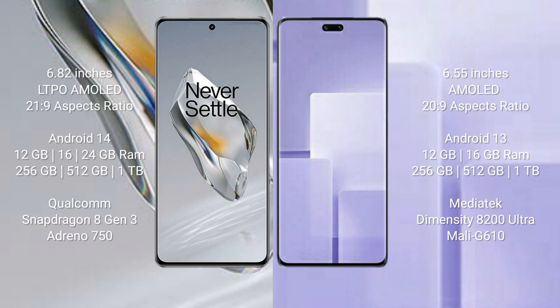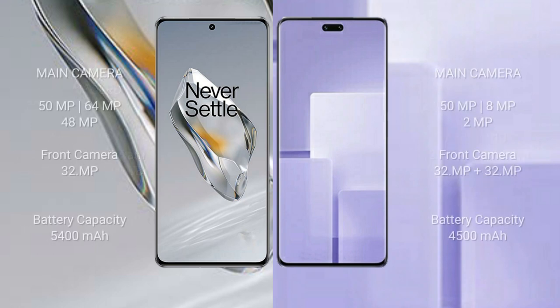OnePlus 12 runs on the Android 14 operating system; Xiaomi CV3 runs on Android 13. OnePlus 12 comes with 12GB, 16GB, or 24GB RAM and 256GB, 512GB, or 1TB internal storage, with a Qualcomm Snapdragon 8 Gen 3 processor and Adreno 750 GPU. Xiaomi CV3 comes with 12GB or 16GB RAM and 256GB, 512GB, or 1TB internal storage, with a MediaTek Dimensity 8200 Ultra processor and Mali-G700 GPU.